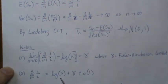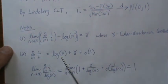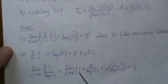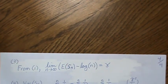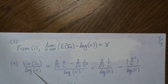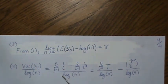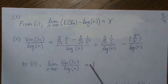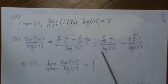Dividing everything by log(n) and taking the limit: the constant term divided by log(n) goes to zero, the little-o(1) term goes to zero, and what remains is 1. So the limit of the expected value of S_n divided by log(n) is 1. Similarly for the variance: dividing by log(n), the sum of 1/i squared over log(n) goes to zero and the sum of 1/i over log(n) goes to 1, so the variance of S_n divided by log(n) also goes to 1.